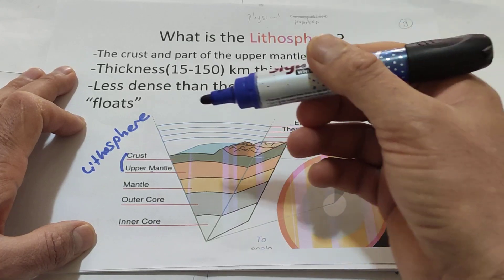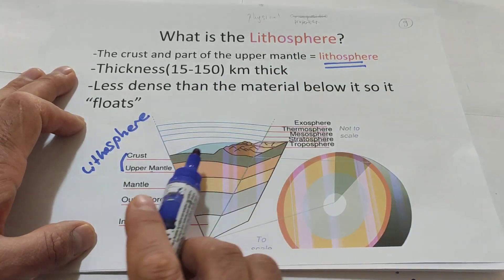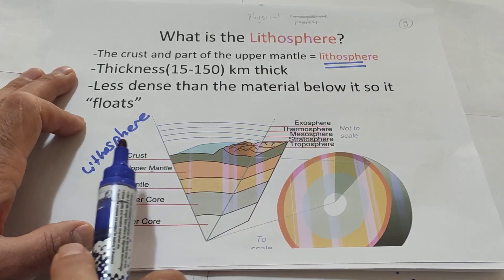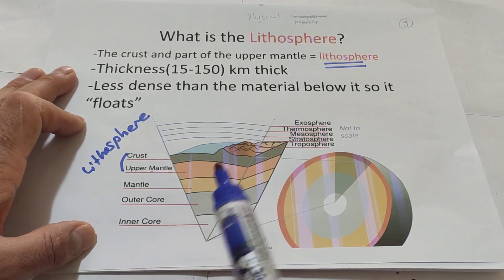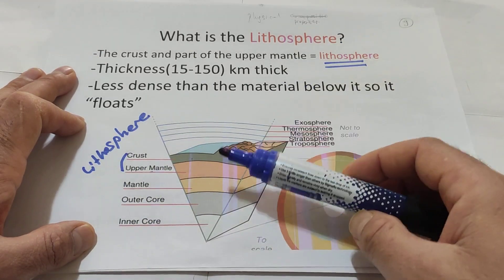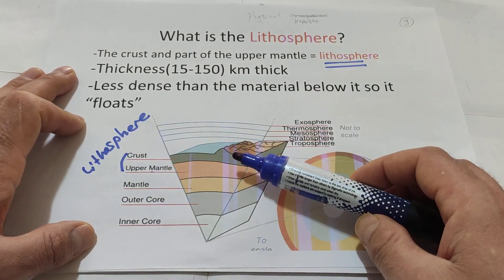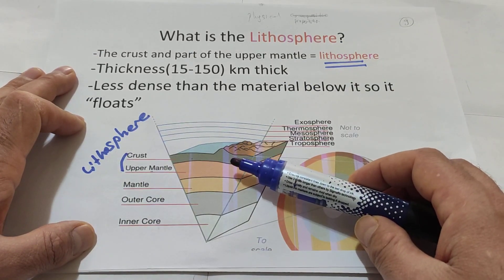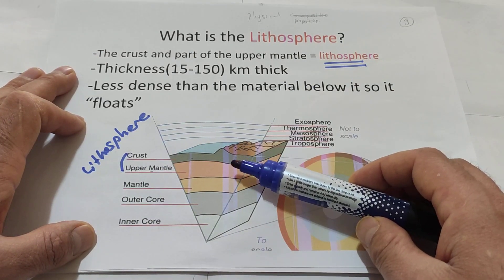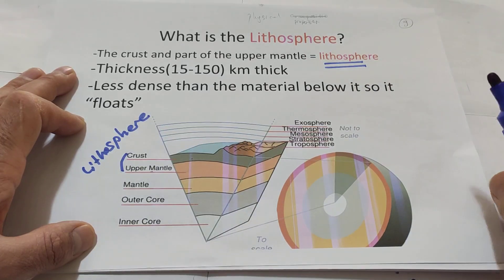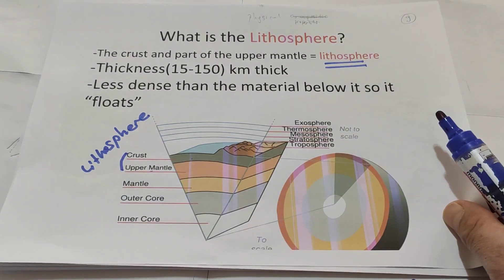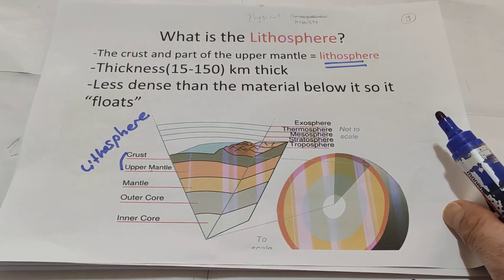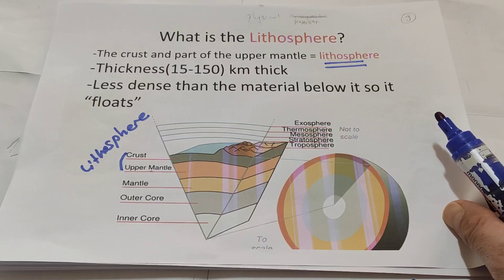What is the first layer? It is firstly the crust. Then, after the crust, the lithosphere. Under the lithosphere, it is the mesosphere, then thermosphere. Then inner core and outer core. These are the physical properties of earth.